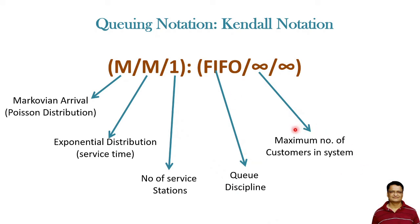Maximum number of customers in the system. We are taking it as infinite. Let us assume that you are at a railway station and there is no limit on the formation of a queue or number of customers that can be in the system.